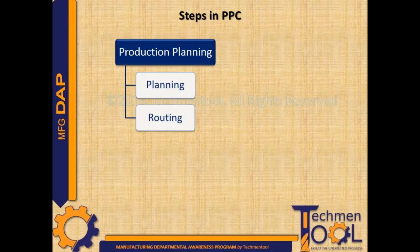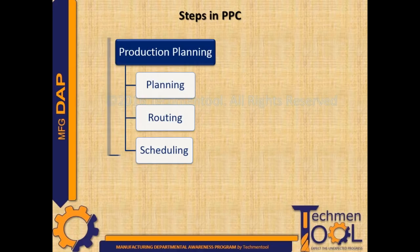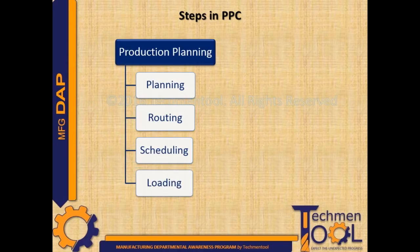Routing is the selection of the path from where each unit has to pass before reaching the final stage. Scheduling is the process of determining the time requirements for each operation to complete; it mainly concerns the time element and priorities of a job. Loading is the process of assigning specific jobs to machine centers based on relative priorities and capacity utilization.